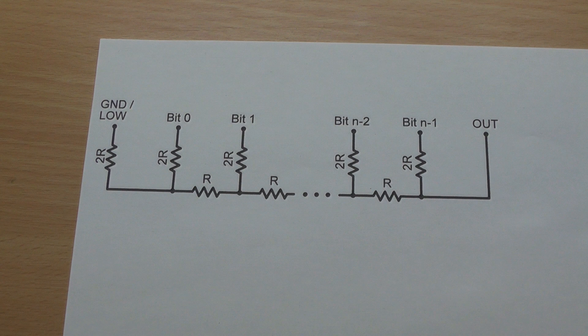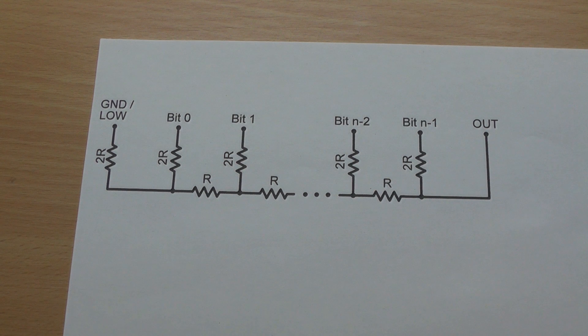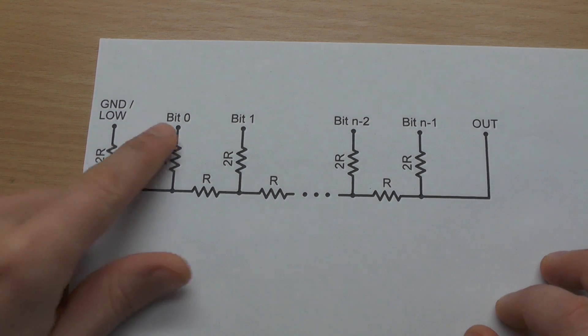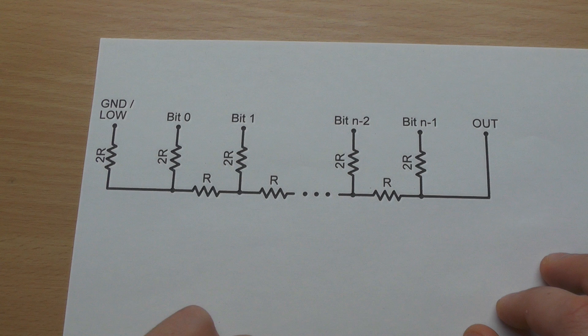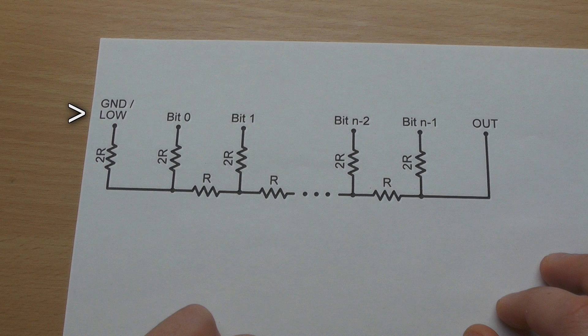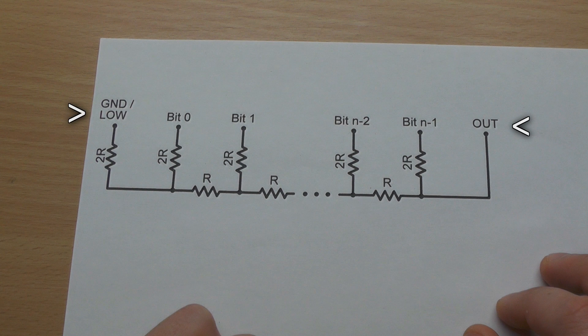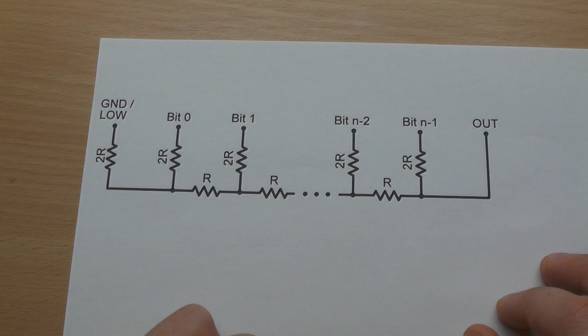The precision of this digital to analog converter depends on the count of bits. We start from the least significant bit on the left to the highest significant bit to the right. There is one end connected to ground and the other is connected to output. The higher the bit, the higher the influence on the voltage.